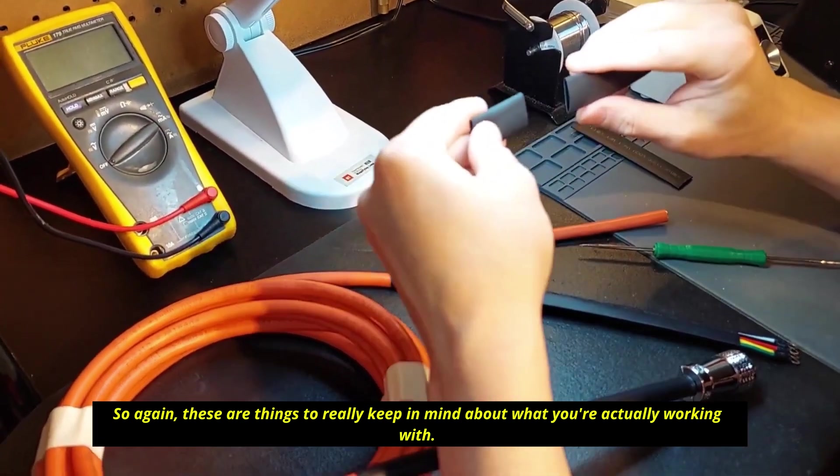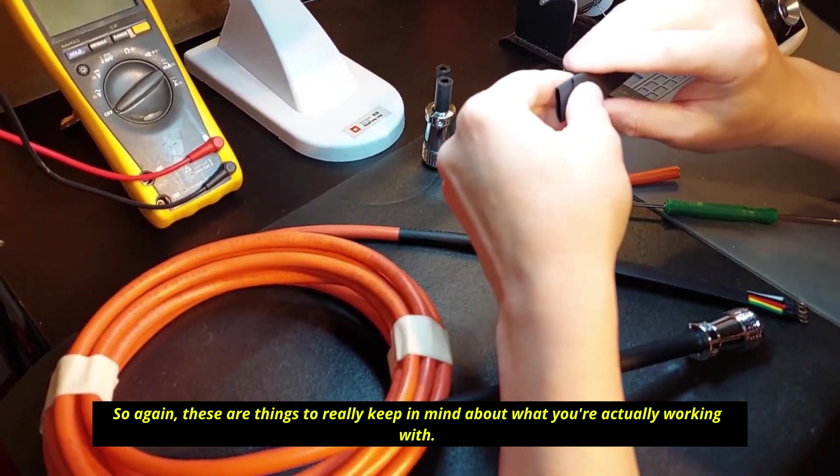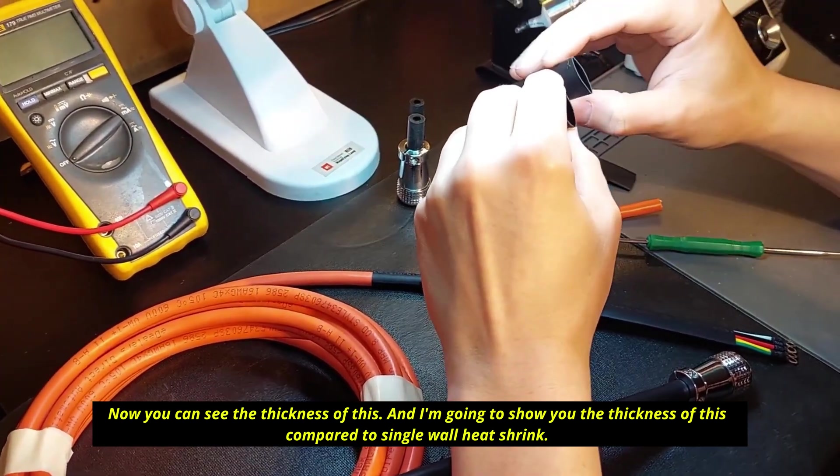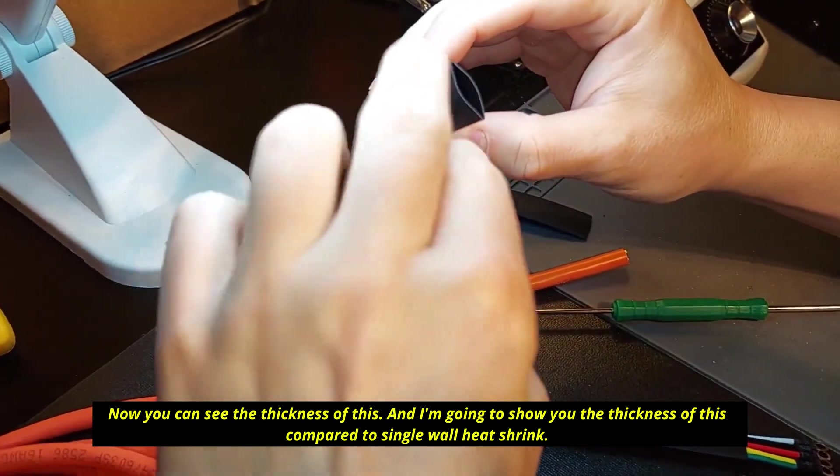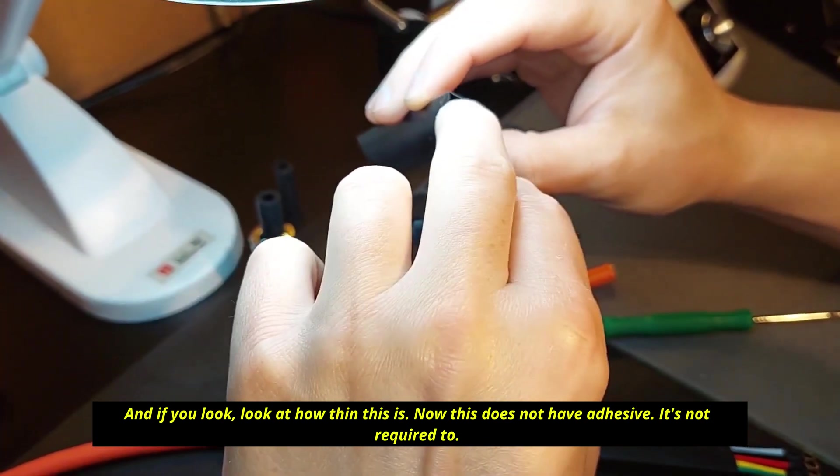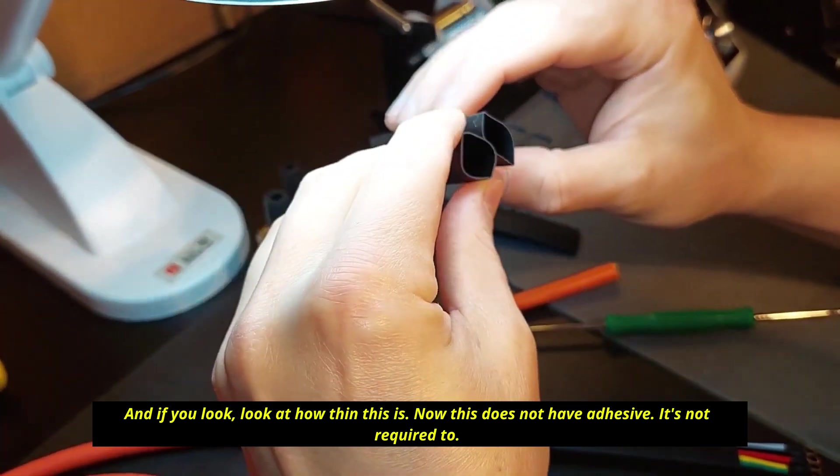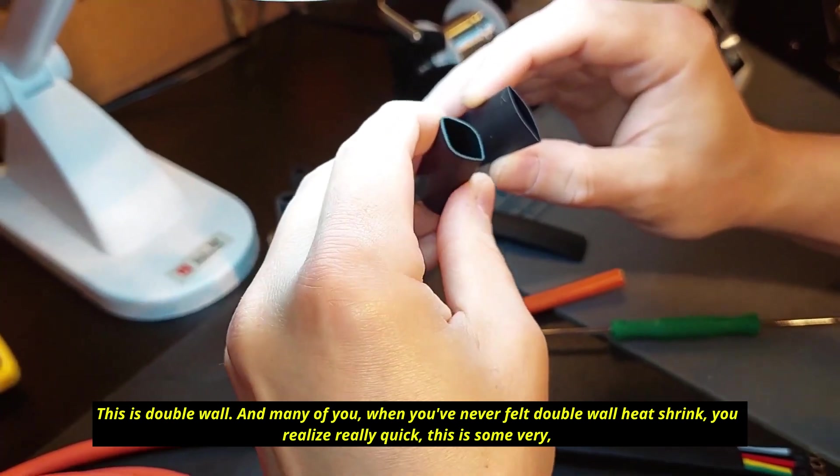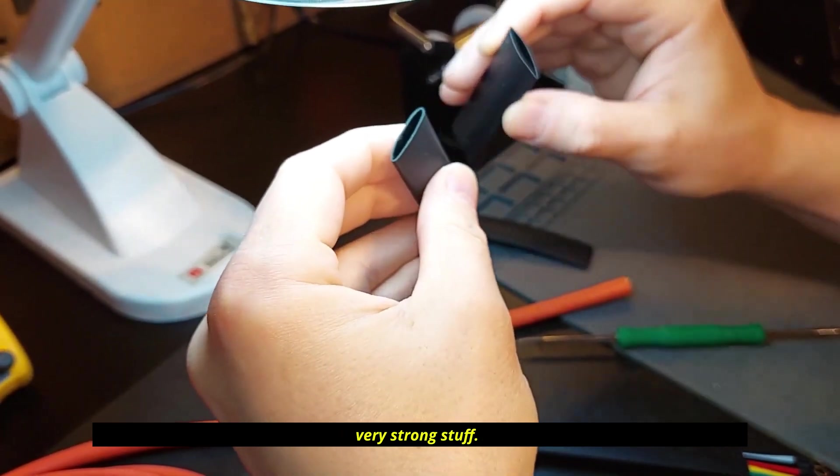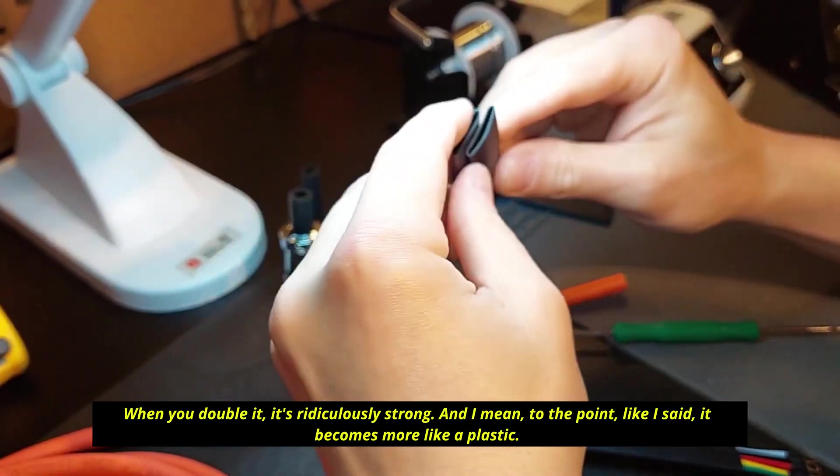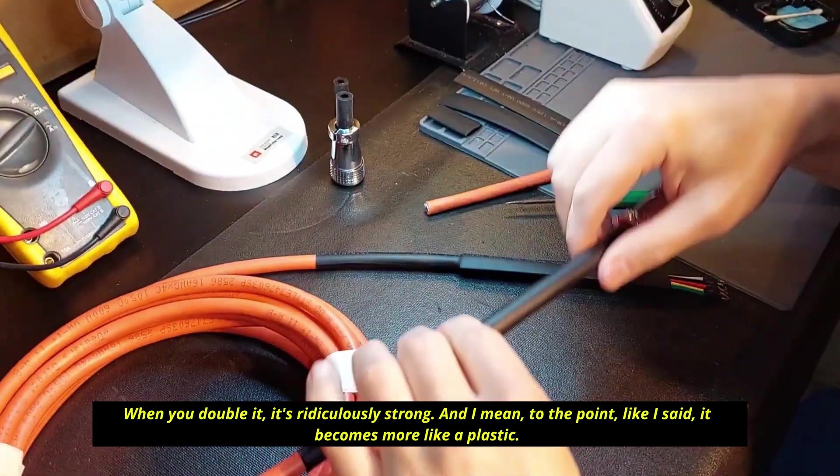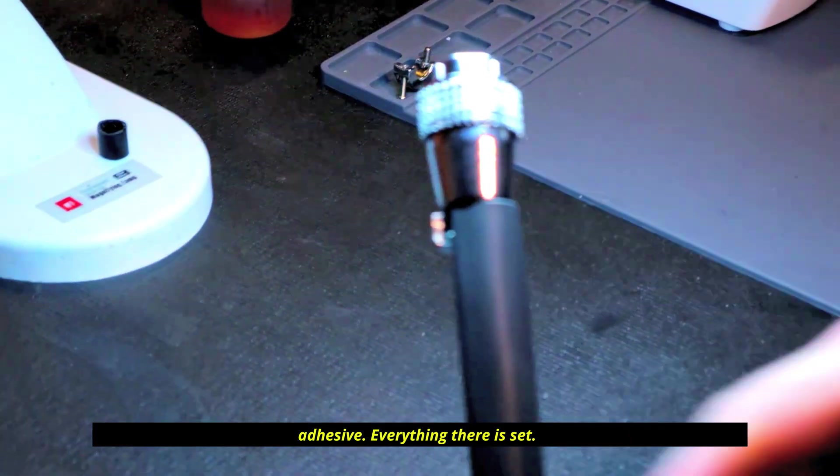These are things to really keep in mind about what you're actually working with. You can see the thickness of this and I'm going to show you the thickness compared to single wall heat shrink. Look at how thin this is - this does not have adhesive, it's not required to. This is double wall and many of you when you've never felt double wall heat shrink you realize really quick this is some very very strong stuff. When you double it, it's ridiculously strong. I mean to the point it becomes more like a plastic. This is super strong. On this end now everything there is set.